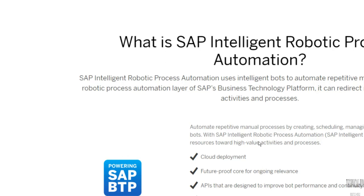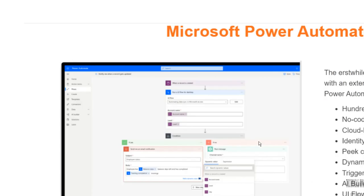Microsoft Power Automate is currently at the fourth level in market, but it is moving up and may very soon reach the number one position, possibly within a few months. Power Automate has easily integrated machine learning, ML, UI automation, and OCR support.